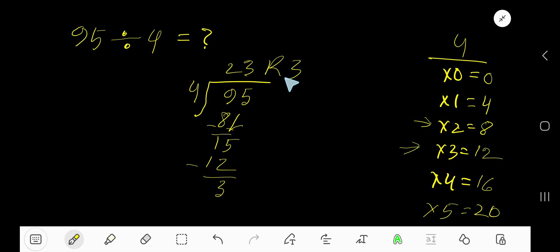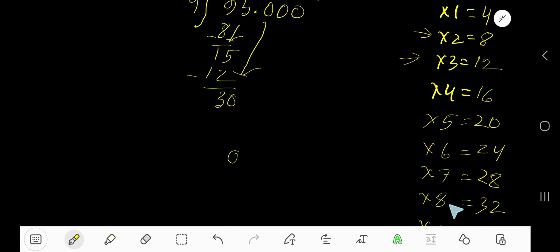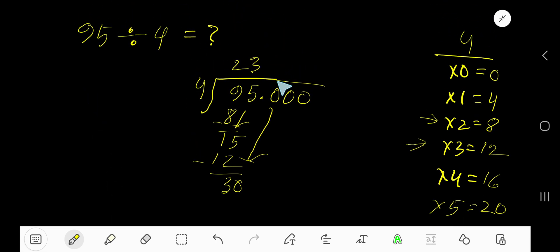If you want to write the answer in decimal form, then what will happen? Just convert this number into decimal and add any number of zeros. Bring down the first zero, so we have 30. 4 goes into 30 how many times? 8 times is 32, 7 times is 28. So write 7, but before this zero there is a decimal. The decimal must come to the quotient directly. 7 times 4 is 28, subtract.